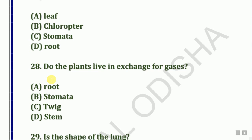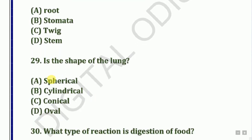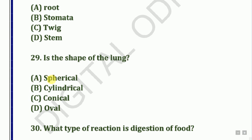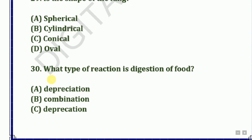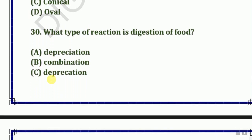Next question: What is the shape of the lung? Options: Spherical, cylindrical, conical, or oval. The answer is C — conical.